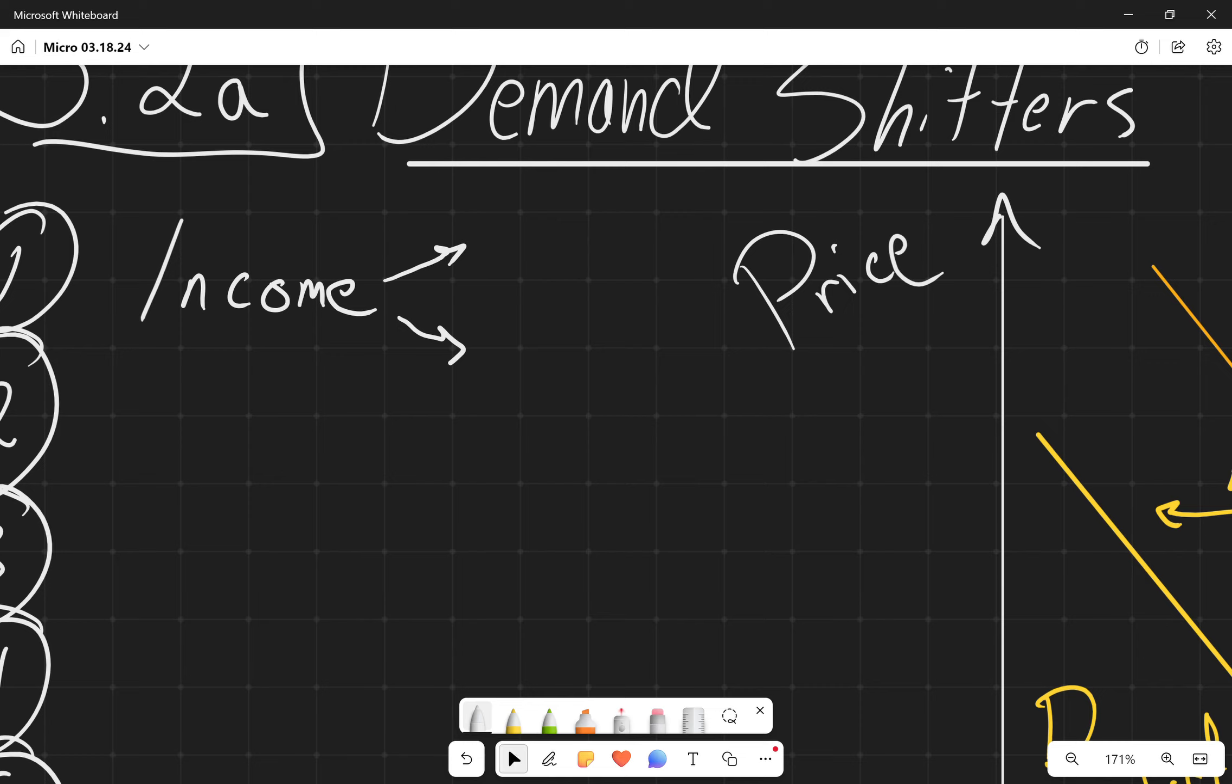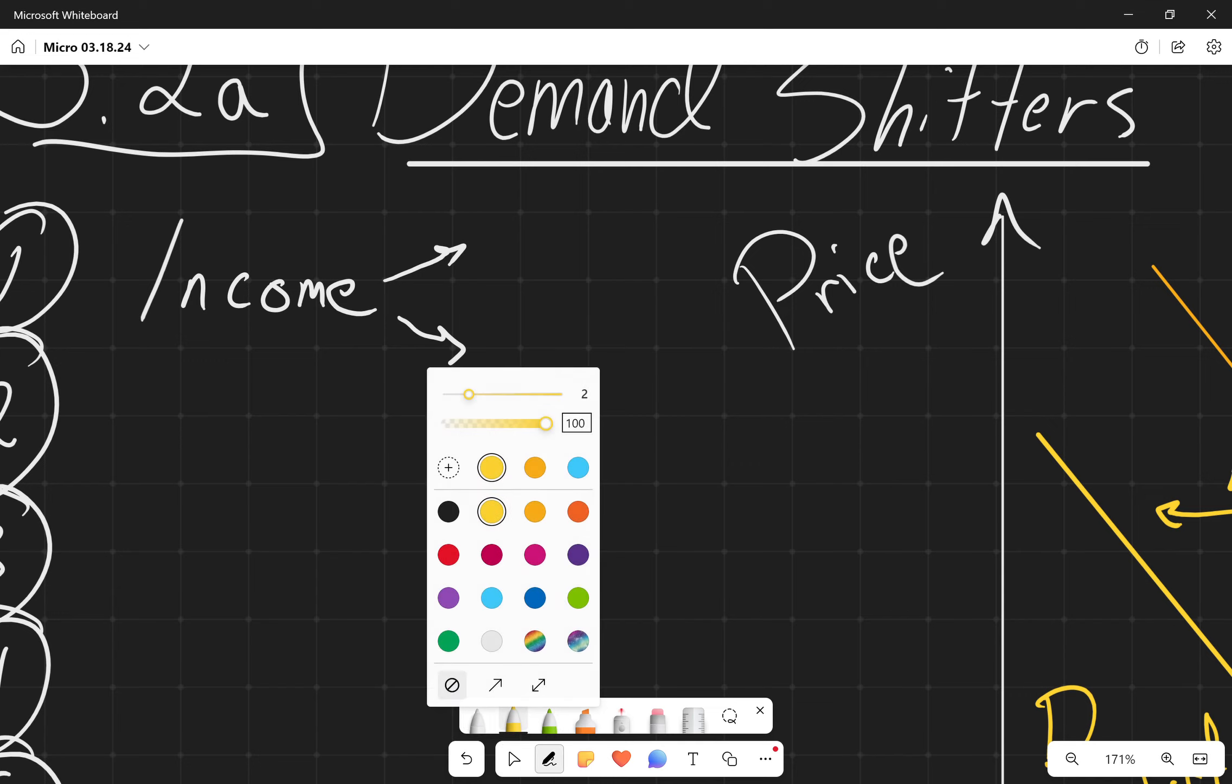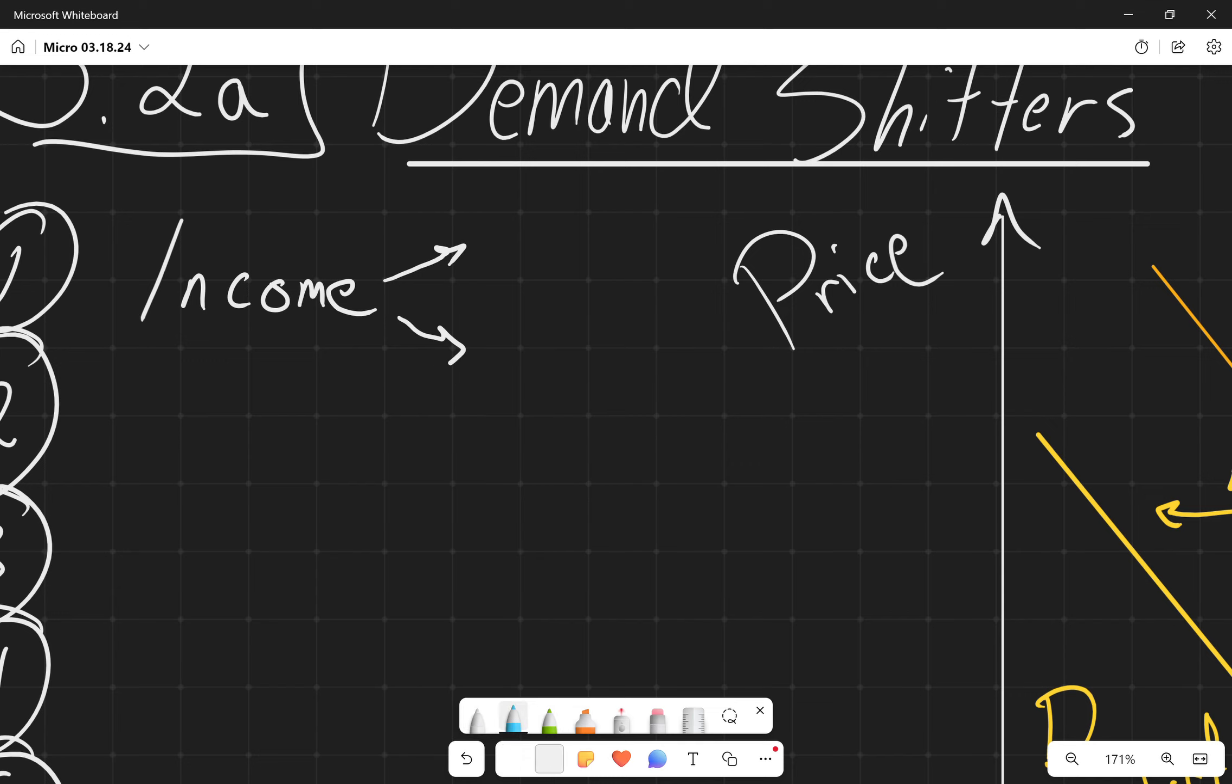So typically, let's say something like a streaming service, right? A streaming service is going to have the relationship that as your income increases, the quantity demanded is going to increase. So again, I said streaming services, right? As you make more money, you're going to, instead of choosing between Hulu and Netflix, you're going to get Hulu and Netflix, right? So these are what's called normal goods.